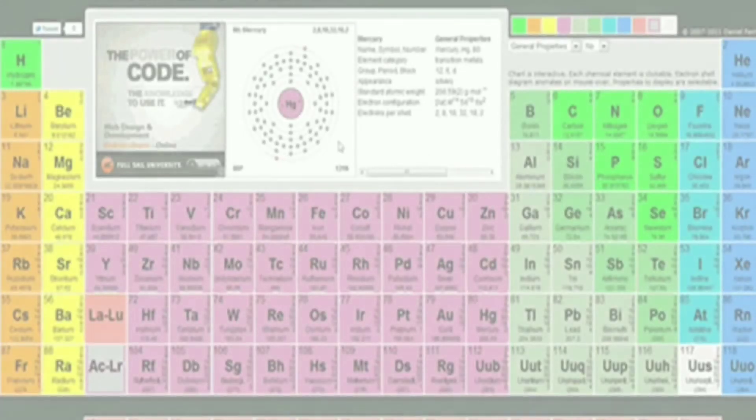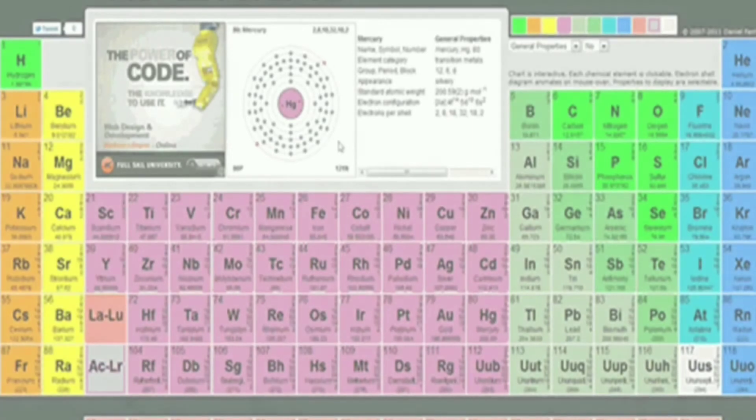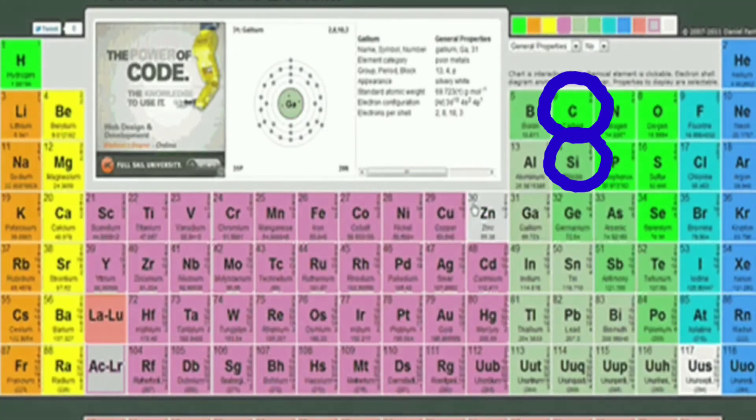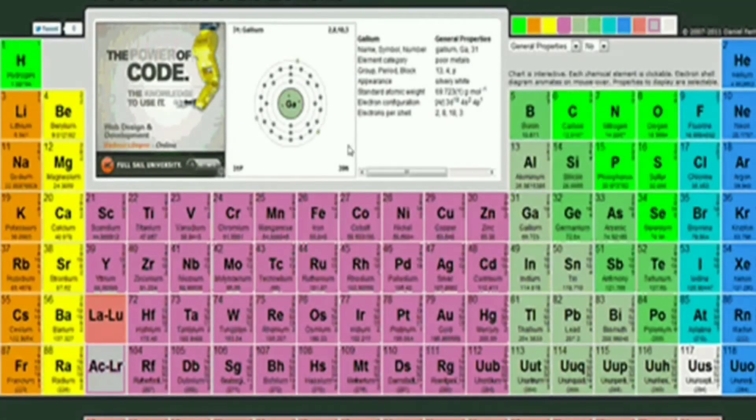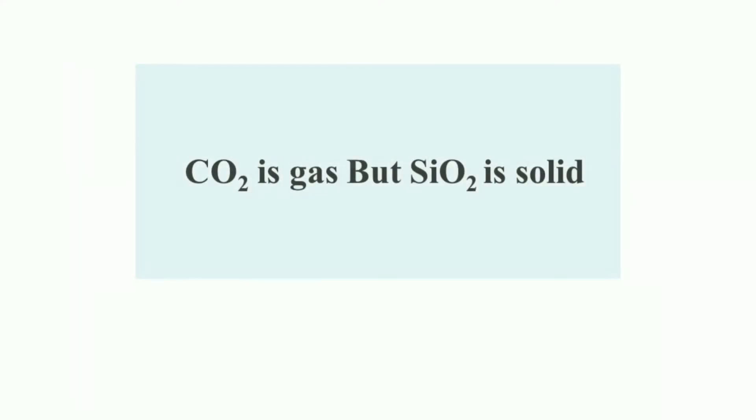We all know that carbon and silicon both are members of group 4A in the periodic table, so they will have same physical and chemical properties. But in reality, carbon dioxide is gas and silicon dioxide is solid.